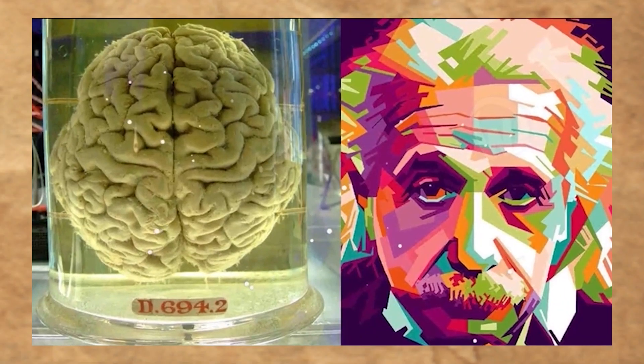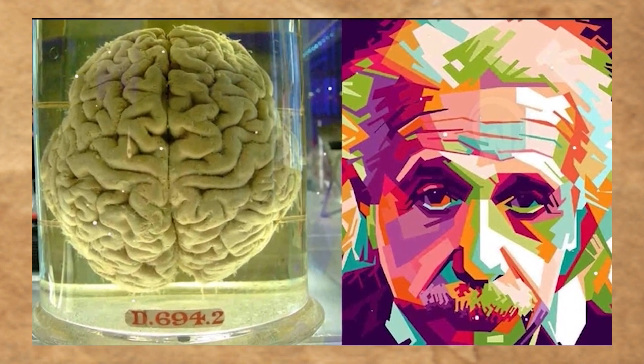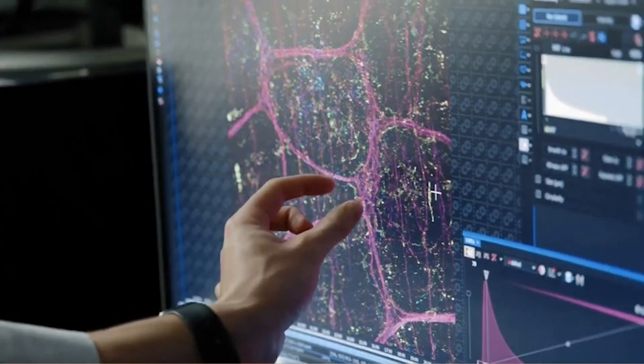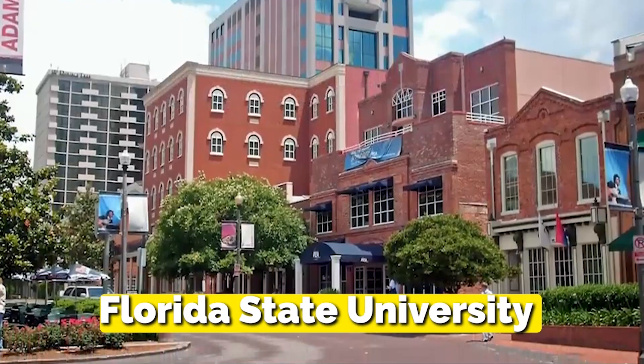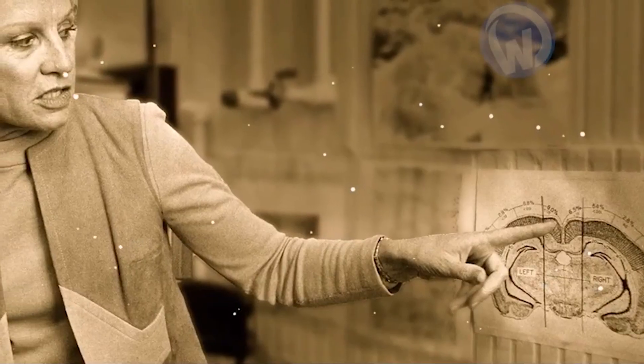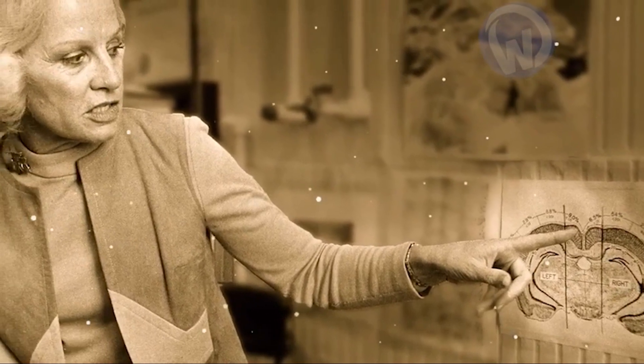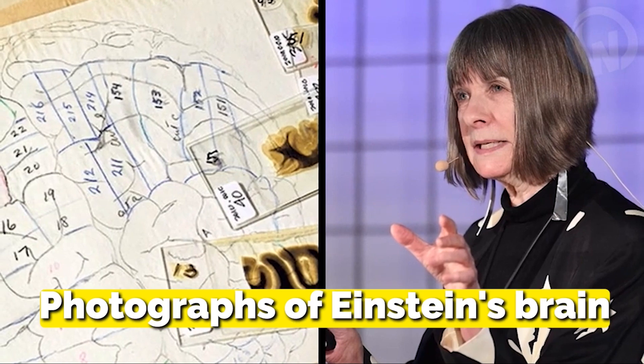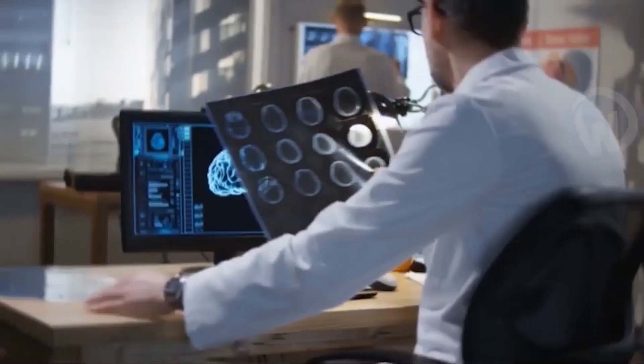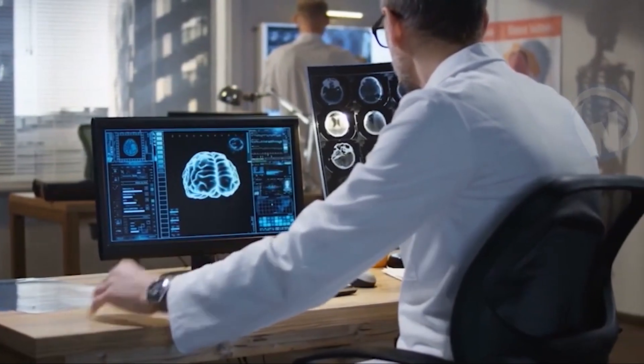Yet, the story of Einstein's brain was far from over. In 2012, a team led by evolutionary anthropologist Dean Falk from Florida State University embarked on a quest to uncover more about this enigmatic organ. They obtained 12 original photographs of Einstein's brain, images that had not been thoroughly examined before. What they discovered within those photographs would astonish the scientific community.